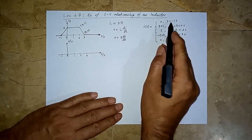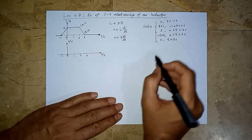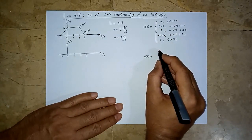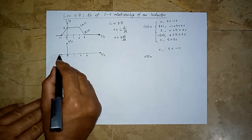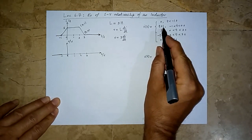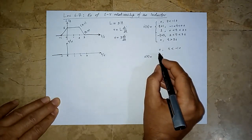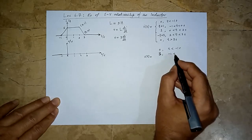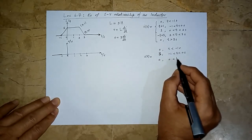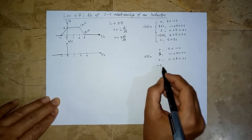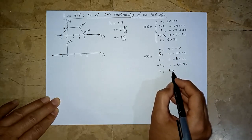Taking the derivative of each expression in each interval and multiplying by 3: the derivative of 0 is 0, so the voltage is 0 before minus 1. The derivative of (t + 1) is 1, multiplied by 3 gives 3 volts between minus 1 and 0. The derivative of the constant 1 is 0, so voltage is 0 between 0 and 2. The derivative of (minus t + 3) is minus 1, multiplied by 3 gives minus 3 between 2 and 3.